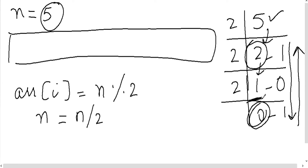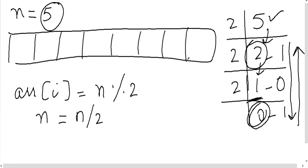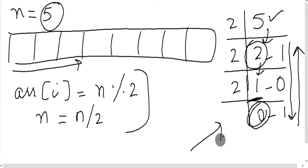Printing reverse order mein kar denge. Yeh jo array hai, yeh flexible array hai, isko hum bound nahi karenge — 10 places le lete hain — lekin hum ise chalate jayenge jahan tak ke hamare saare remainders ikattay nahi ho jaate.